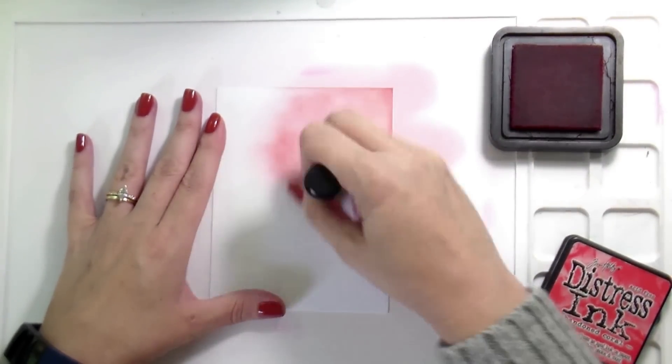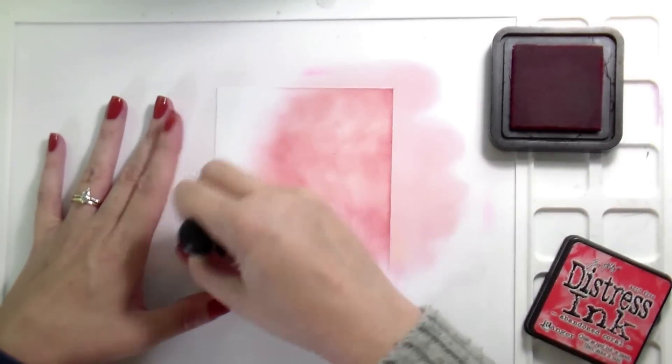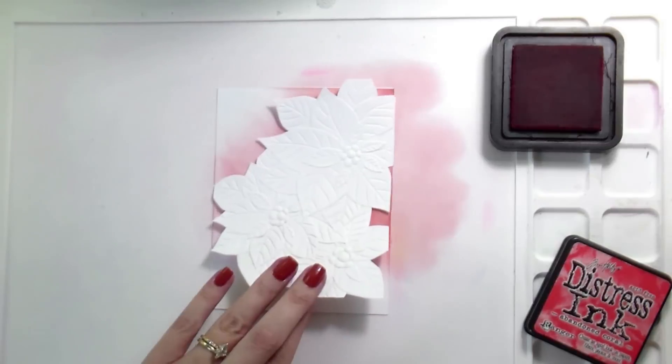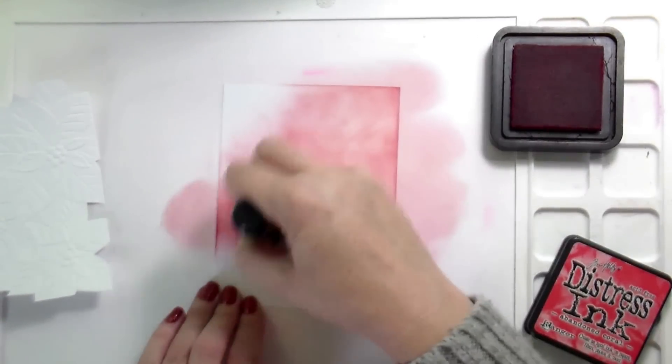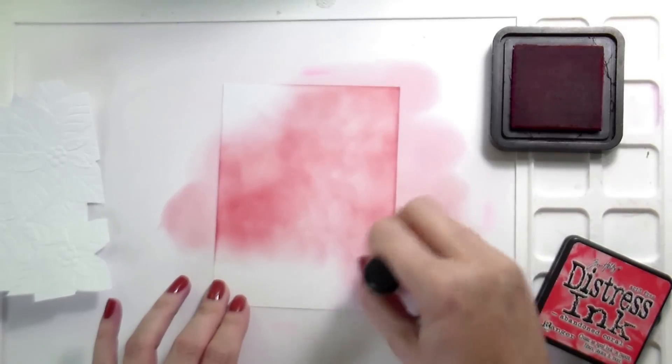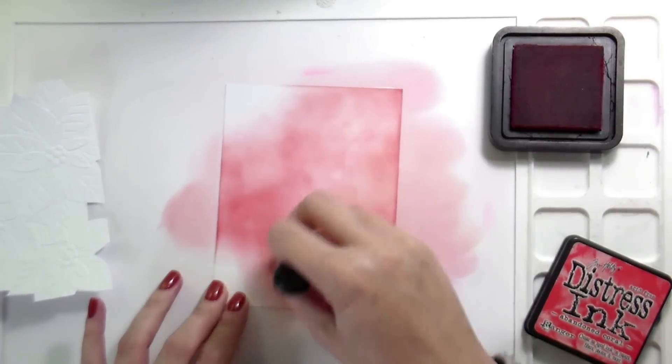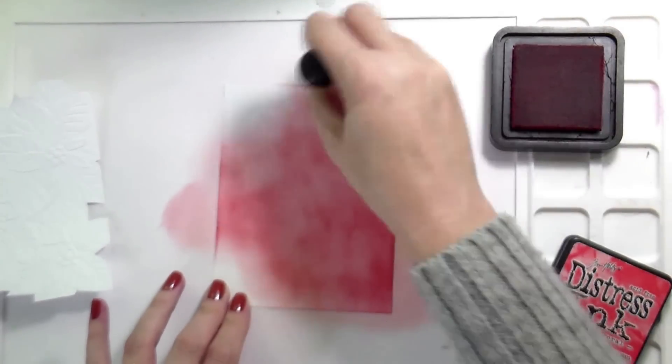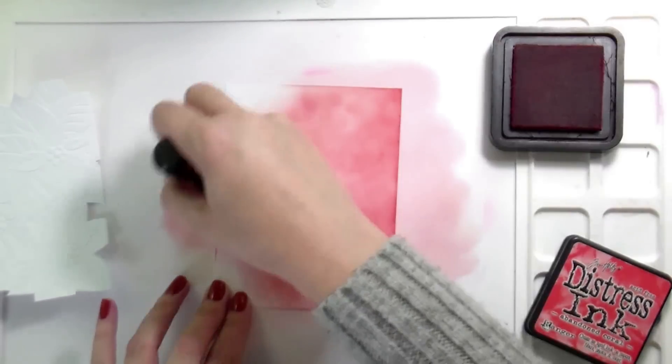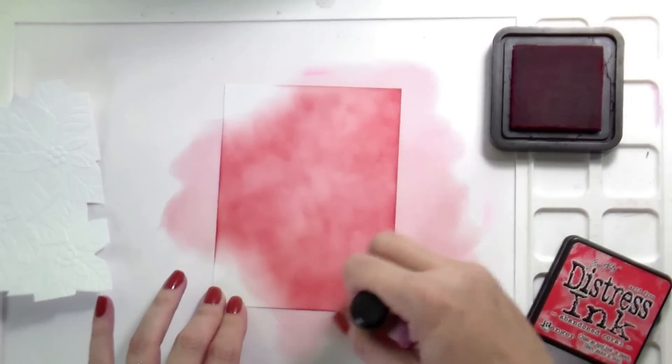But the two that we're here to talk about are these 3D embossing folders. One of them is the Poinsettia Cluster and that's the card that we're working on now. And then the other one is, I'm going to butcher the pronunciation, but I even researched it guys, I tried so hard, is the Buried Cotoneaster, I think is correct. We'll talk about that in a minute. Let's talk about what I'm doing in the card.